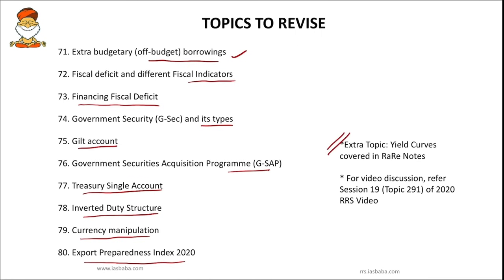Finally, there is one more important topic — yield curves — which is covered in the RaRe notes. Since I had covered yield curves exhaustively in the previous Rapid Revision Series, I have provided a link in the RaRe notes. You can also go to session number 19 of the previous year's rapid revision video — topic 291 — which deals with yield curves and different types of yield curves. Go through that video; it is important for this year's exam as well.